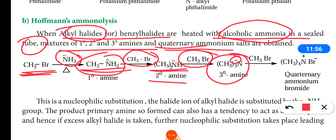Tertiary amine still has a lone pair of electrons, so one more mole of alkyl halide reacts via the lone pair and you get a quaternary ammonium salt, in which four methyl groups are linked to nitrogen. Nitrogen bears a positive charge and bromine bears a negative charge, making the final molecule neutral overall.